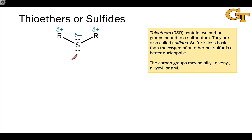Let's take a quick look at the sulfur analogs of ethers, which are called thioethers or sulfides. Sulfides are analogous to thiols, except that instead of having the sulfhydryl group, they just have an additional carbon group linked to the sulfur.